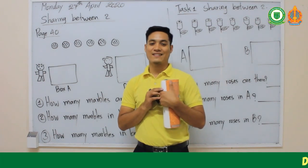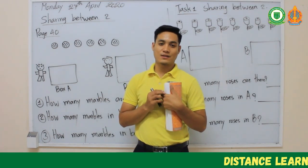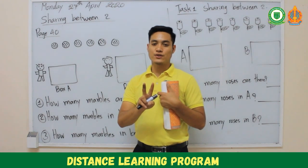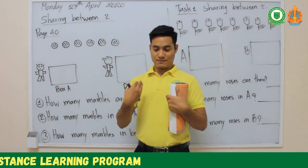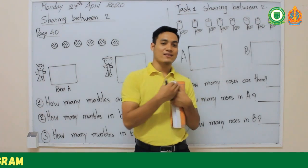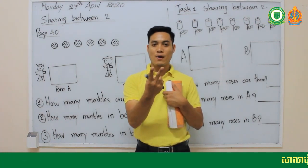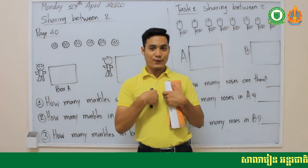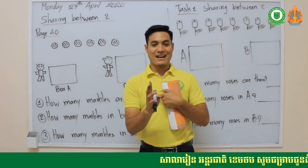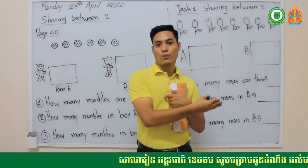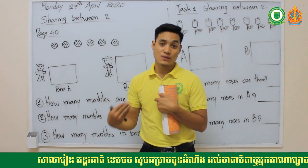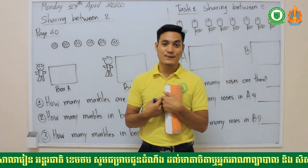For example, I have two apples and I need to share between two — myself and my brother. So two apples: I get one apple and I give one apple to my brother. I get one, my brother gets one. This is how we share between two.